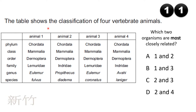The table shows the classification of four vertebrate animals. Which two organisms are most closely related? Organisms sharing the same genus are always more closely related. Looking at the table, organisms 1 and 3 share the same genus, so the answer is B: organisms 1 and 3.